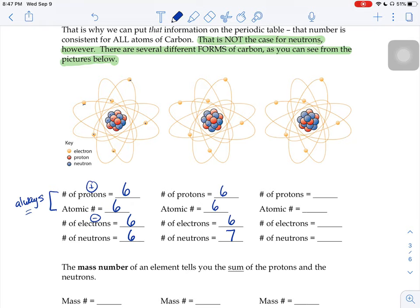And for that one all the way on the right, this guy has six protons, so atomic number of six. It also has six electrons to keep that atom neutral. But this one has one, two, three, four, five, six, seven, eight neutrons. So, proton number is consistent. The neutron number varies.